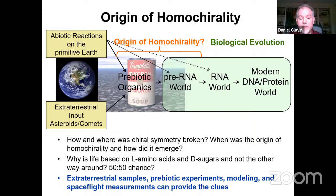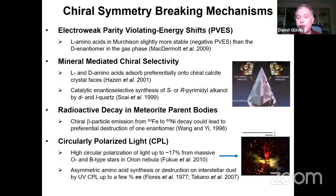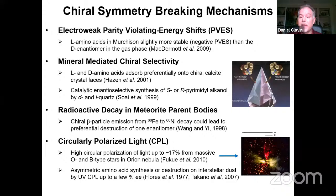Many different mechanisms for chiral symmetry breaking have been proposed. We need to break the symmetry and then amplify it. For example, circularly polarized light has received a lot of attention, but still requires some amplification. This has been found in the Orion Nebula with about 70% polarization, and this polarized light can interact preferentially with one enantiomer through synthesis or destruction, leading to small excesses. However, experiments have shown that these excesses amount to only a few percent — nowhere near the homochirality we see in life — so there definitely needs to be an amplification mechanism.